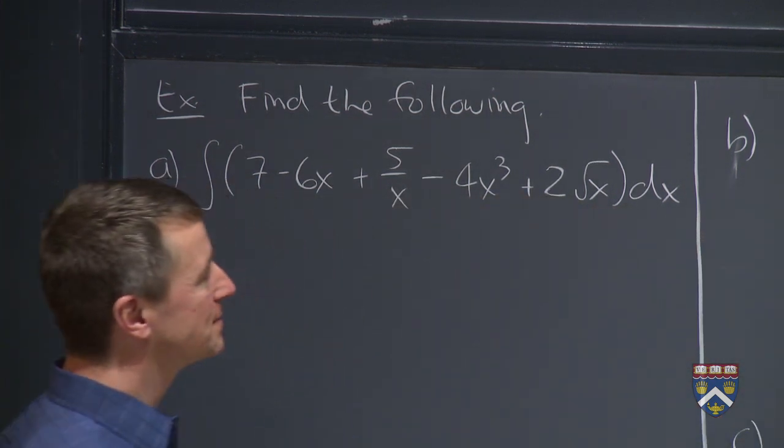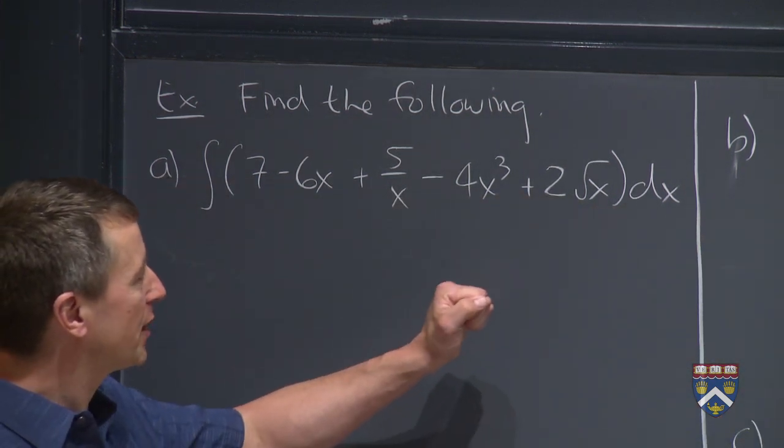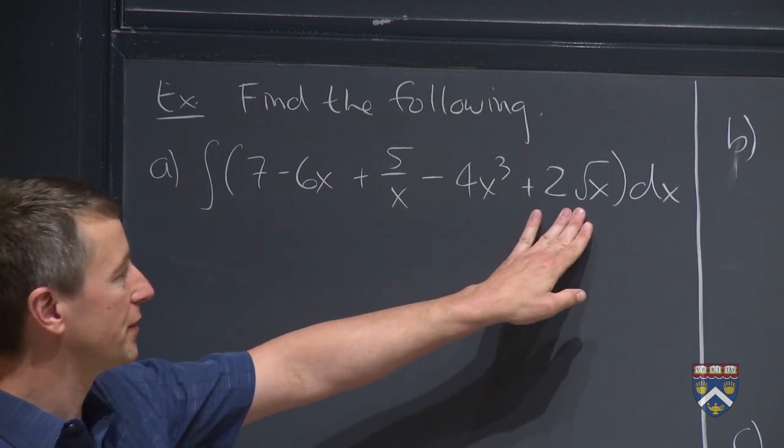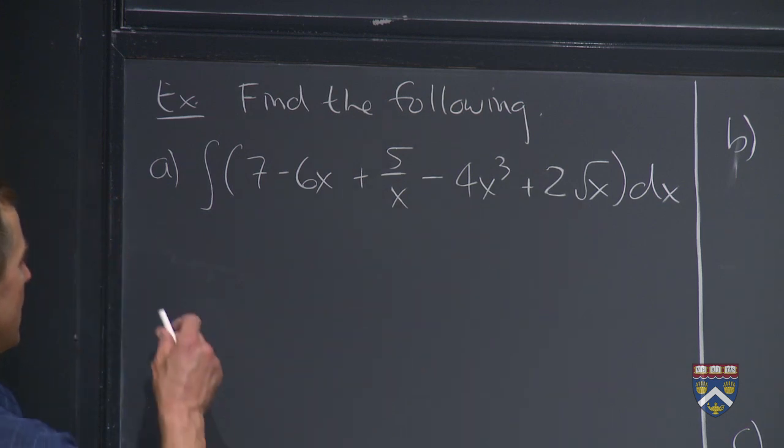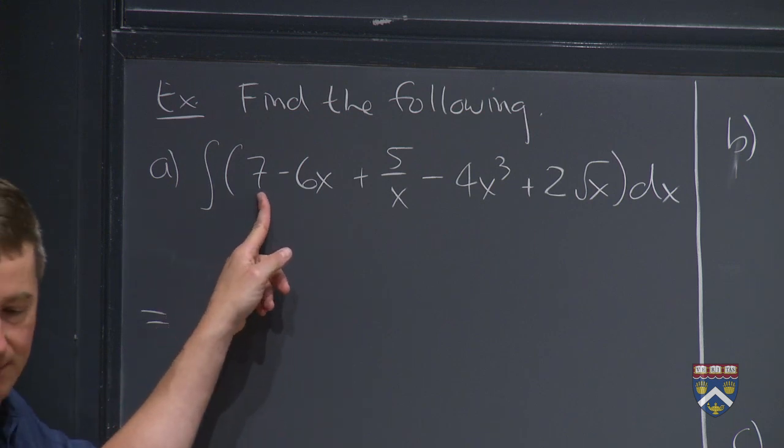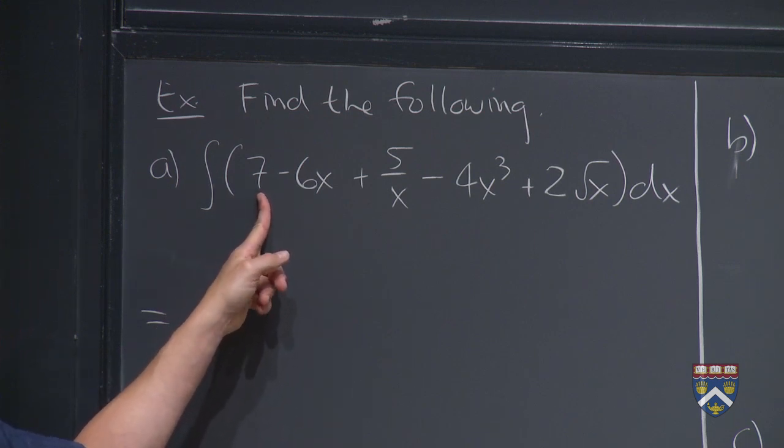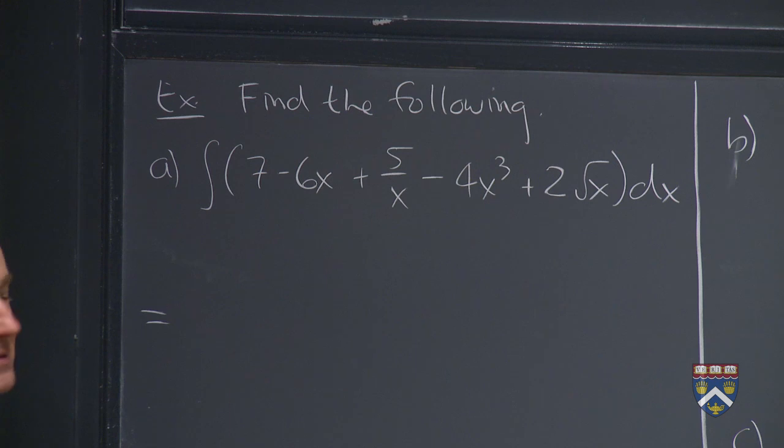Just as it was with derivatives, it'll be a lot nicer if we rewrite some of these, in particular this one. We'll talk about that when we get to it. But first of all, this is saying the antiderivative of 7. That's saying find a function whose derivative is 7.